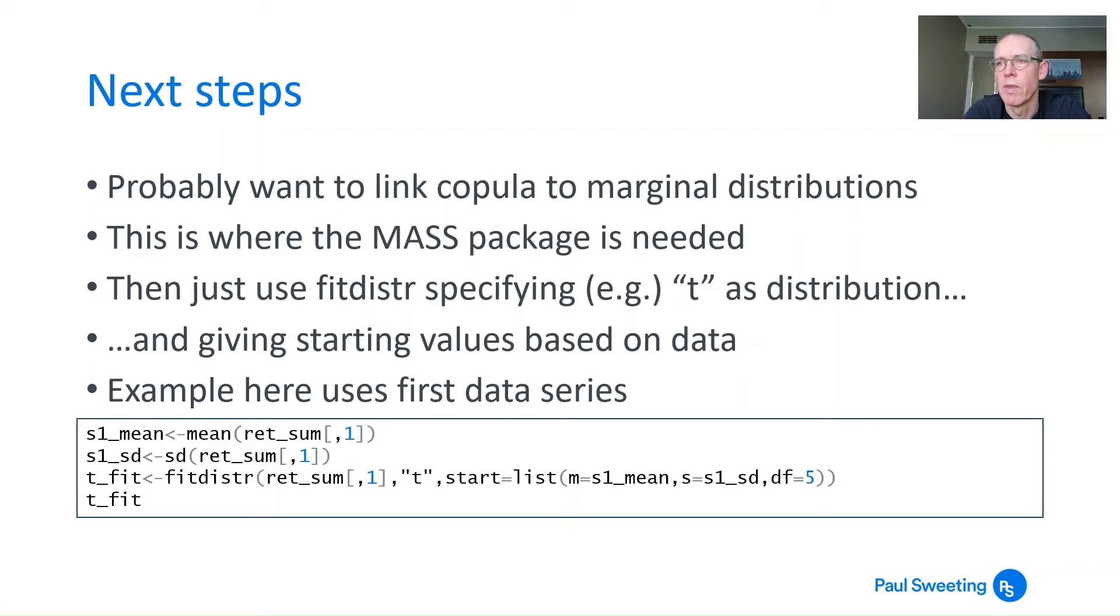The copula output is useful, but if you want simulations of particular returns, you need to link the copula outputs to a particular marginal distribution. If you remember, we started with underlying distributions and stripped out the marginal distributions to get just probabilities. We're essentially reversing that process. We're creating probabilities, then using them to plug back into a marginal distribution to get simulated returns. This is where the MASS package comes in that we installed at the start.